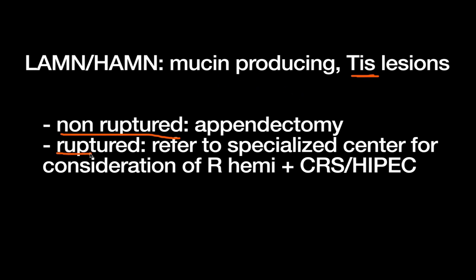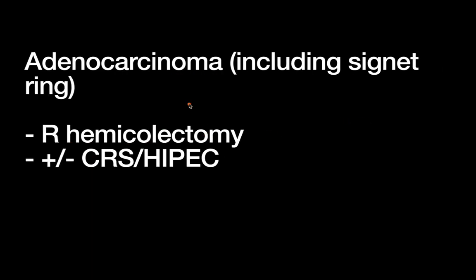However, if they are ruptured, this is where the mucin part gets confusing because you get worried about peritoneal spread of this mucin. So ruptured lesions — even if they're just tumor in situ, even if they're just in the LAMN or HAMN category — should get referred to a specialized center with experience in peritoneal surface malignancy for consideration of a right hemicolectomy as well as HIPEC.